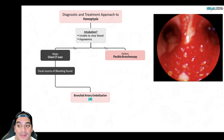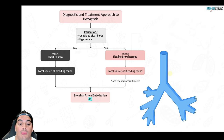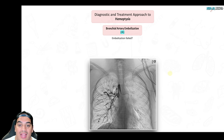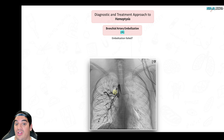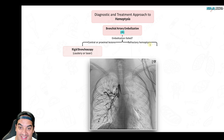If the patient does require intubation because they can't clear the blood or are experiencing hypoxemia, don't send them to CT flat — they'll aspirate. Intubate first, then use a bronchoscope to find the bleeding source. Place an endobronchial blocker, then go to IR for embolization. If embolization fails, consider rigid bronchoscopy to cauterize or laser the bleed if it's a central or proximal bronchial lesion. If all else fails — refractory hemoptysis — proceed to surgery such as pneumonectomy or lobectomy.